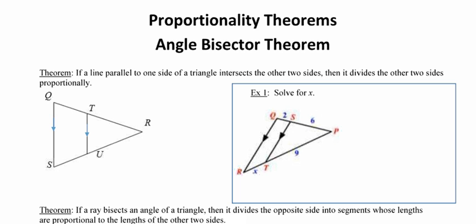So in other words, what this is saying is that because this segment TU is parallel to the side of the triangle QS, then the two pieces of side QR, so the green piece and the blue piece, are going to be proportional to the two pieces of SU and UR.